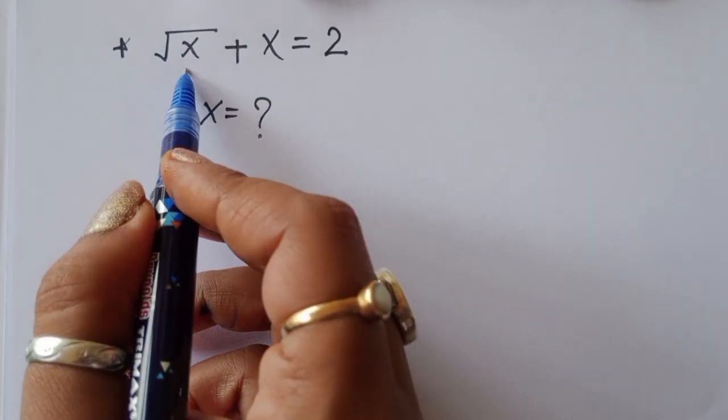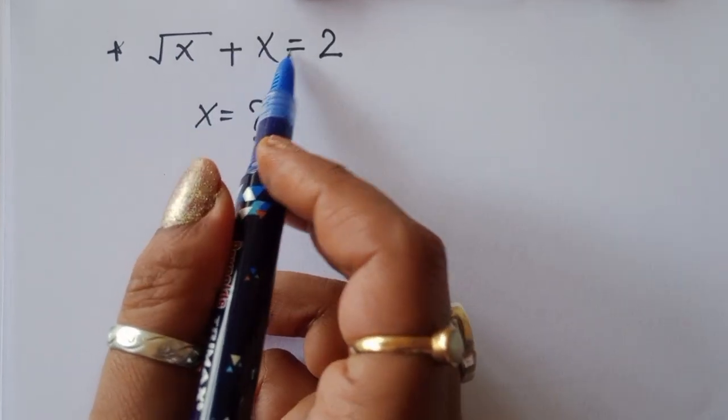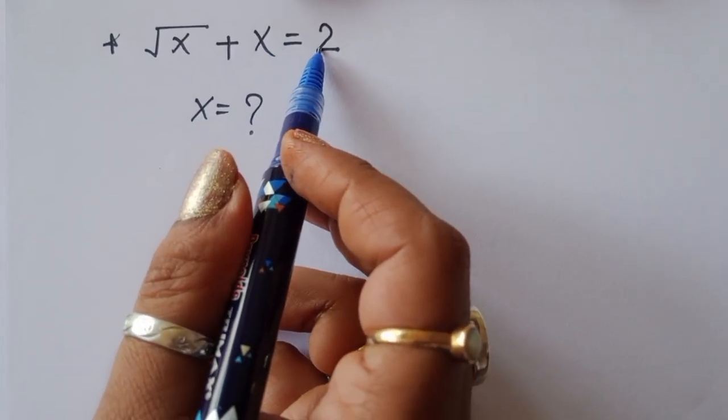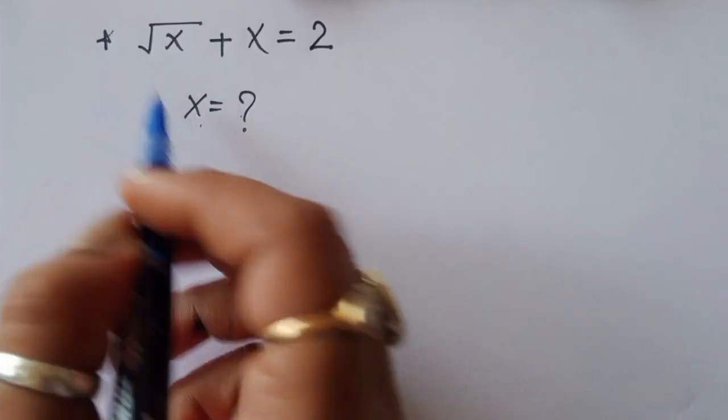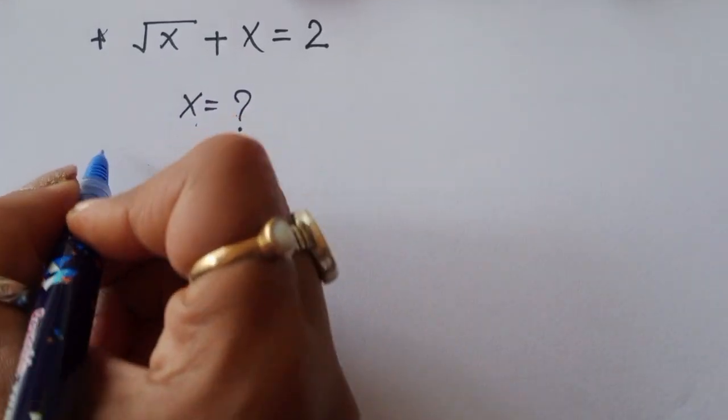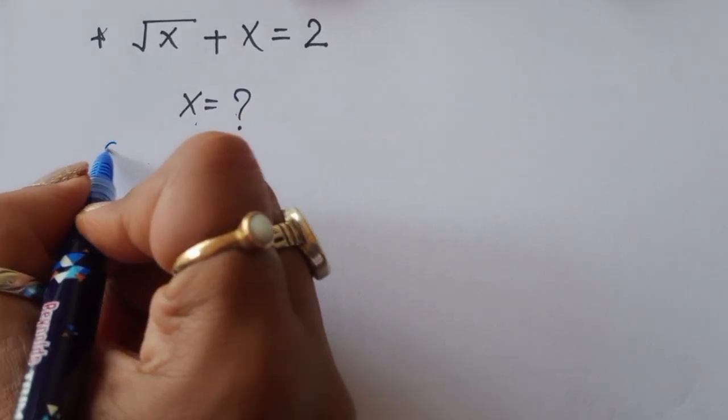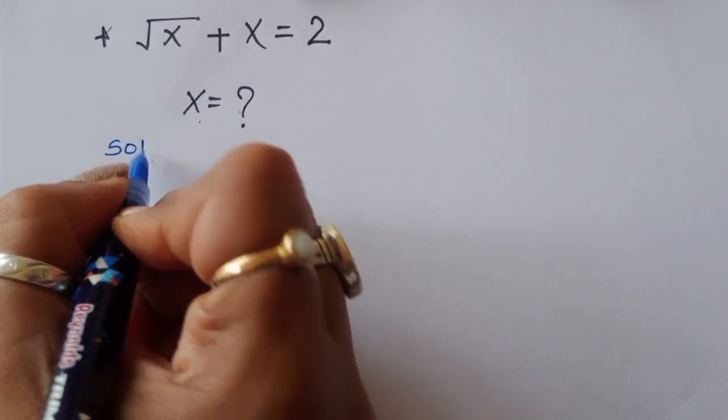The question is: given √x + x = 2, we have to find out the value of x. Let's see the solution.